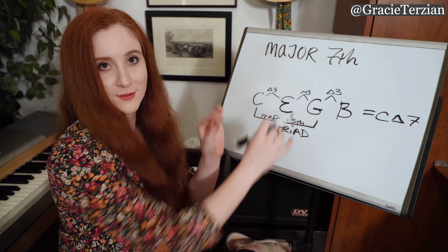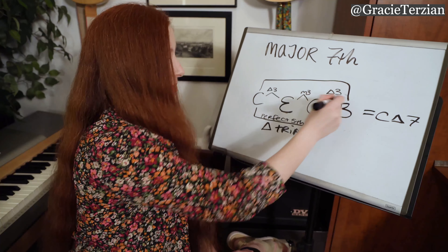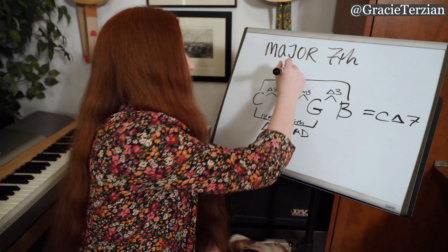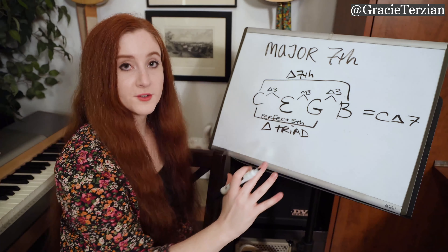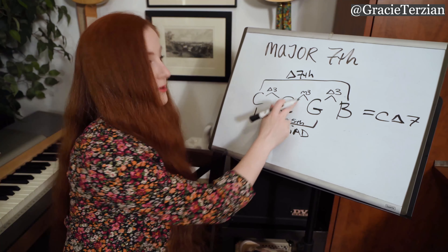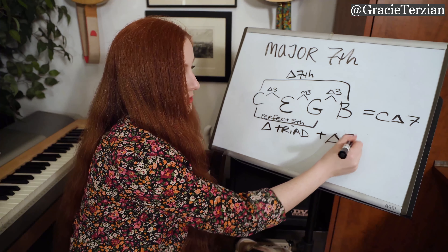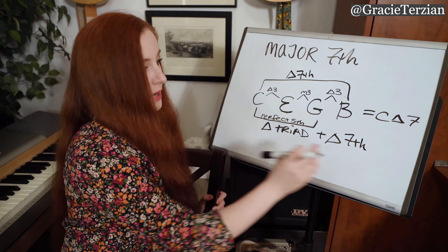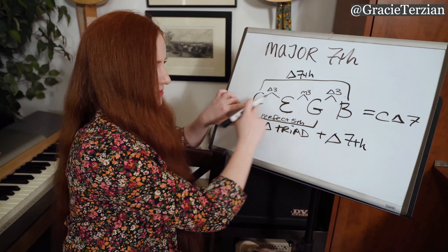The last interval I want us to analyze is from C all the way to B. What is that interval? That is a major seventh. So we could think of a major seventh chord as having a major triad — which has a major third and then a minor third interval — plus a major seventh. We have a C major triad (C, E, G) and then we're adding a major seventh on top. We're always referring back to the root, so the major seventh is a major seventh up from C.